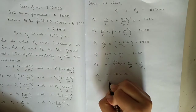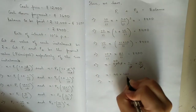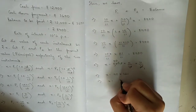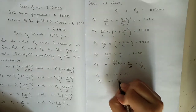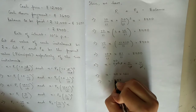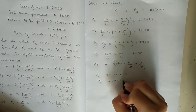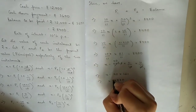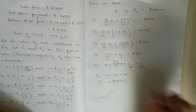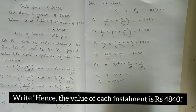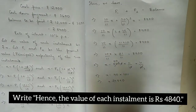This implies x is equal to rupees 4,840. That is the value of each installment.